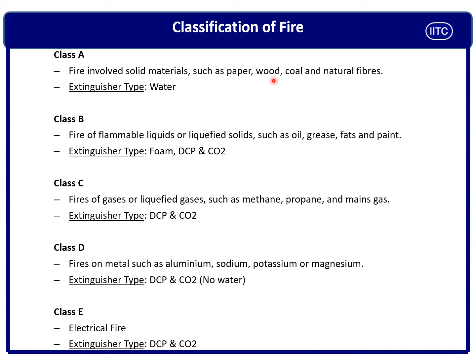If you are in the fire department, safety department, or are a plant or maintenance manager, you should know the classification of fire. There are five types — Class A, B, C, D, and E. Class A fire involves solid materials like paper, wood, coal, natural fiber, and plastic. For Class A fire, we use water to remove heat.